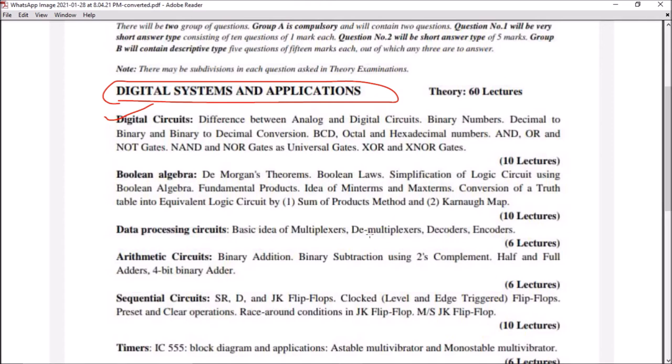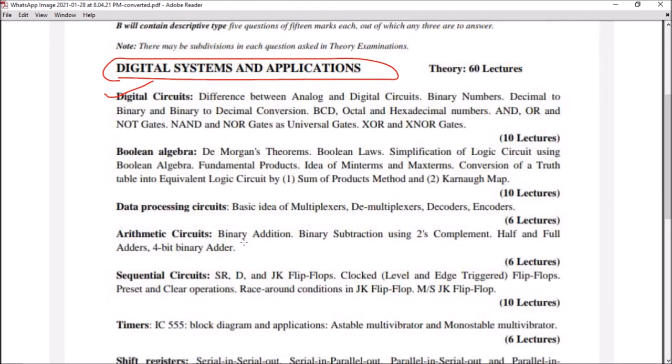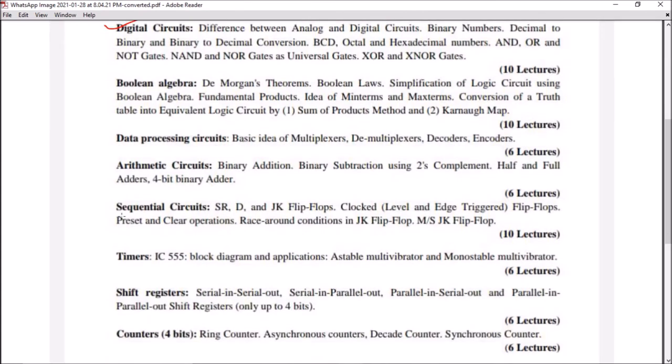The third chapter includes the basic idea about multiplexers, demultiplexers, decoders, and encoders. Next we have binary addition, binary subtraction using two's complement, half adder and full adder, and four-bit binary adder.